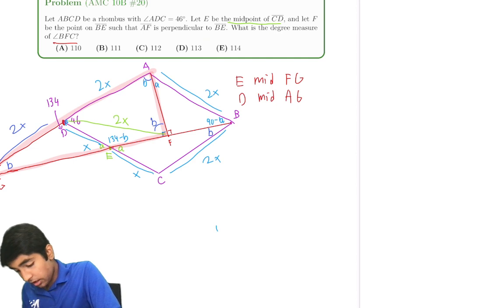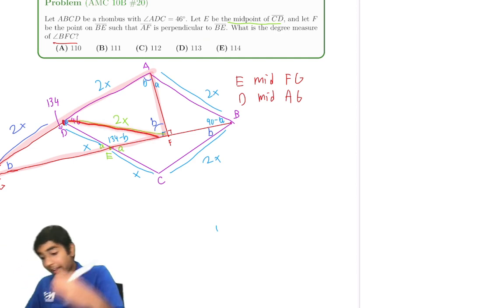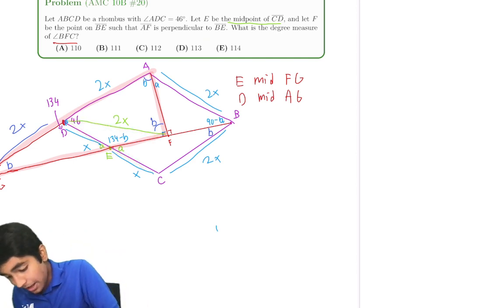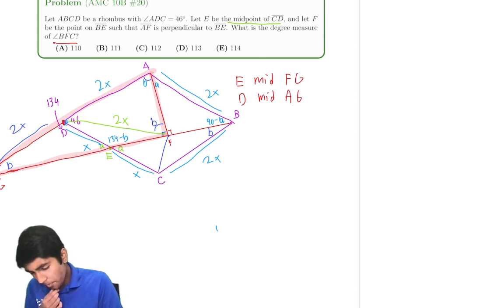Oh, but we also have another pair of isosceles triangles. 2X, 2X. That's crazy, right? So another isosceles triangle pair.